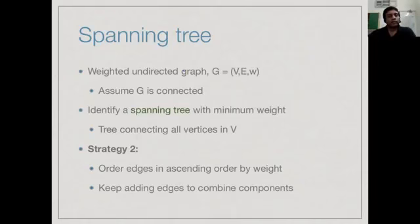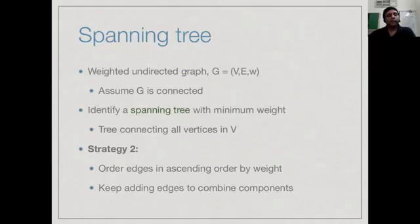Kruskal's algorithm keeps trying edges from smallest to largest, and for every edge, if it can add the edge without violating the tree property, it adds it. In the process of adding edges, it makes sure it does not produce a cycle. If we keep adding edges so long as they do not produce cycles, the claim is that at the end we get a minimum cost spanning tree.